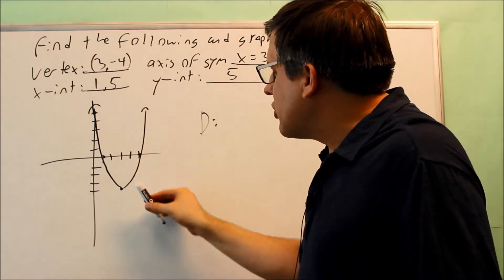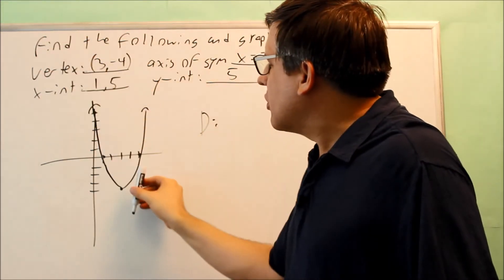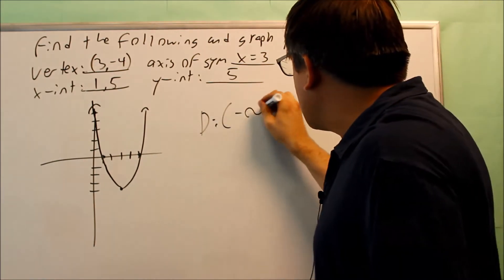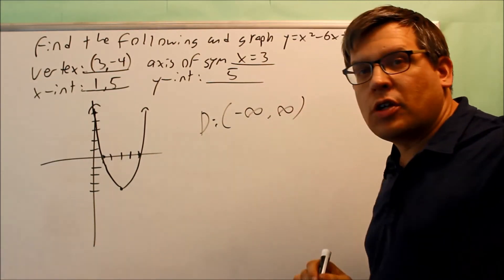We can see that by the graph as well. These are going to, this will keep going that way and this will go this way. So because of that, all of our x-values are being used, negative infinity to positive infinity would be the domain.